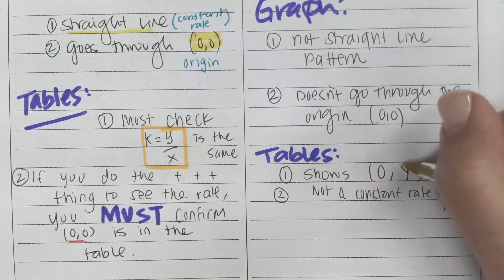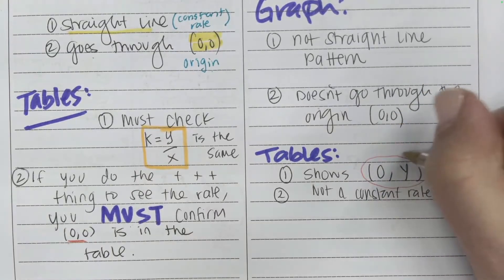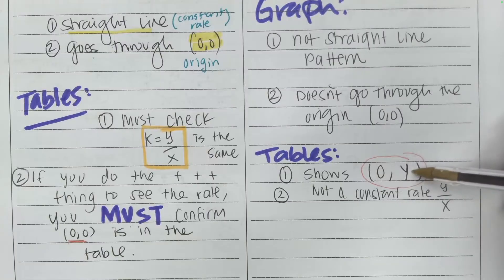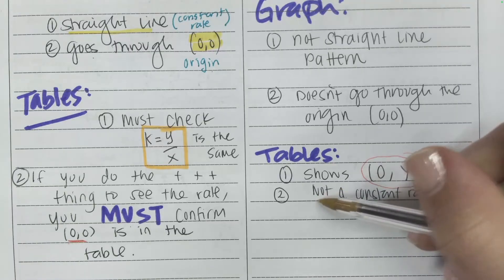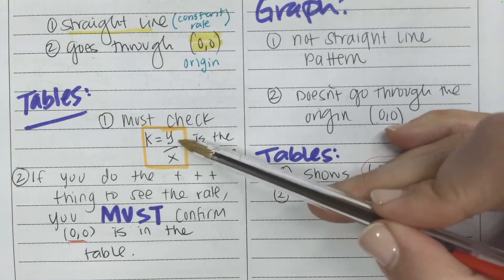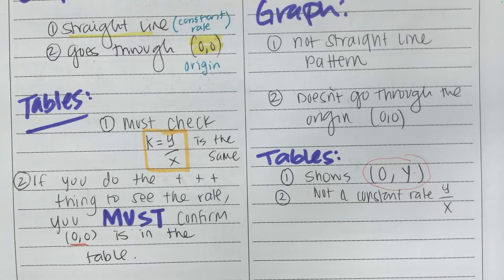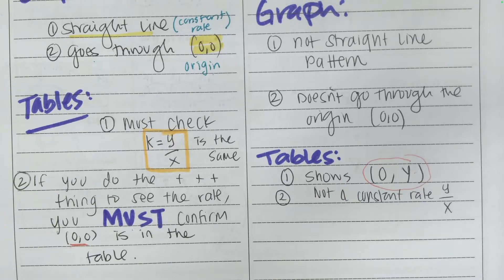If it's non-proportional, one of the most obvious cases is that you're going to see 0, some other number. So some initial value would be there. And the other thing is when you're checking your y divided by x relationship, you're going to see that it is not constant.